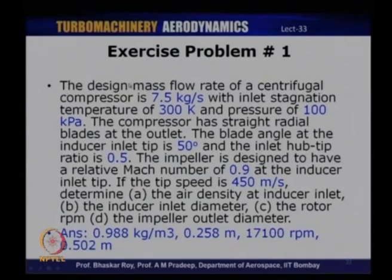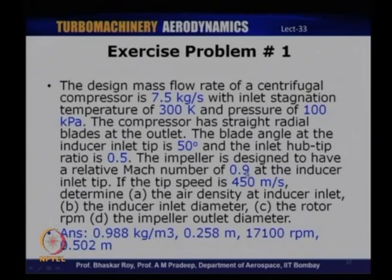Exercise problem 1: A centrifugal compressor has a design mass flow rate of 7.5 kg/s, inlet stagnation temperature 300 K, pressure 100 kPa, straight radial blades at outlet, blade angle at inducer inlet tip 50 degrees, inlet hub-to-tip ratio 0.5, relative Mach number 0.9 at inducer inlet tip, and tip speed 450 m/s. Determine: (A) air density at inducer inlet (0.988 kg/m³), (B) inducer inlet diameter (0.258 m), (C) rotor RPM (17,100 rpm), and (D) impeller outlet diameter (0.502 m).